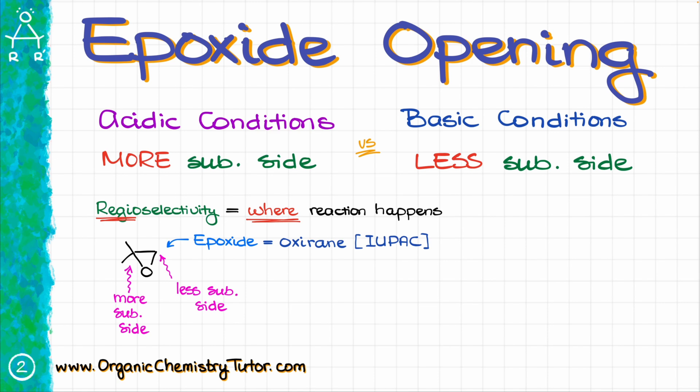Depending on the nature of our reagents and conditions, the ring can be opened from either the more substituted side or from the less substituted side. The TLDR version here is that the acidic conditions open our epoxides from the more substituted side, while the basic conditions open the epoxides from the less substituted side. Now let's talk about the details of why that happens and how.